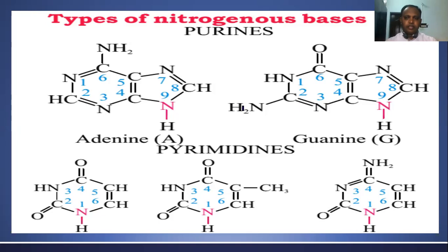There are two types of nitrogen bases: purine and pyrimidine. Purines are heterocyclic compounds having a structure consisting of two ring structures — one six-member ring and one five-member ring. Pyrimidine bases are also heterocyclic compounds but with only a single ring structure. Here I have given the diagram showing the structure of purine and pyrimidine bases.